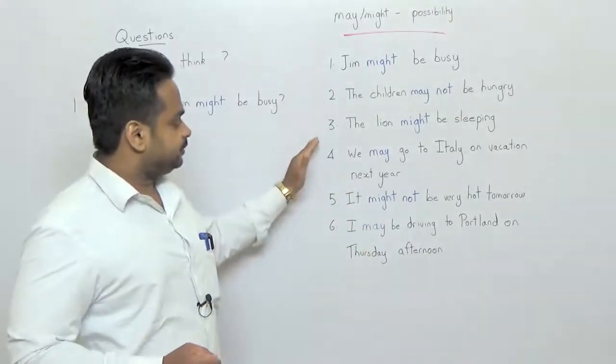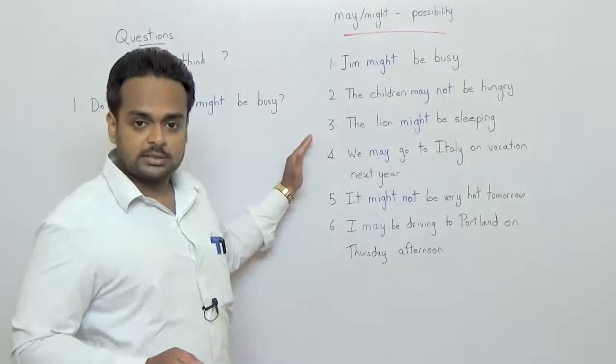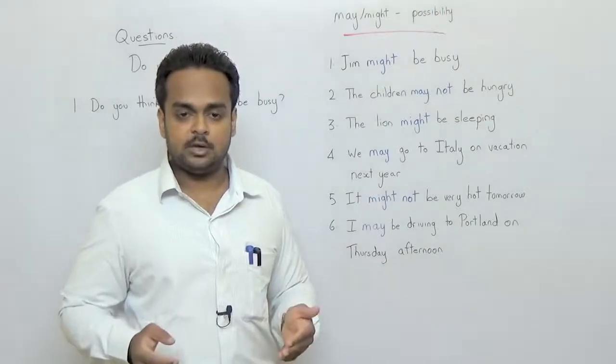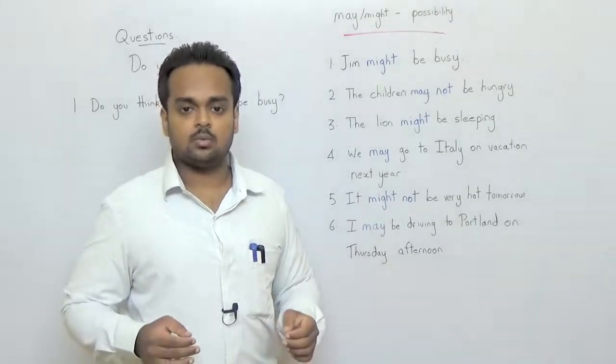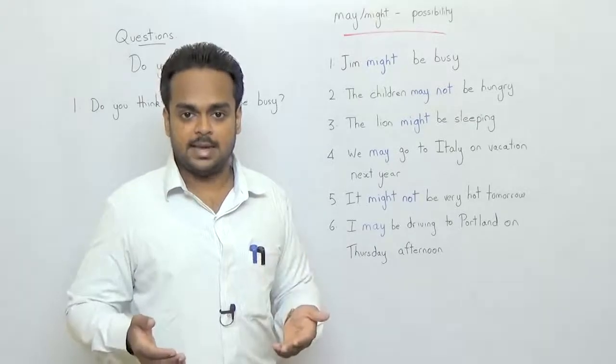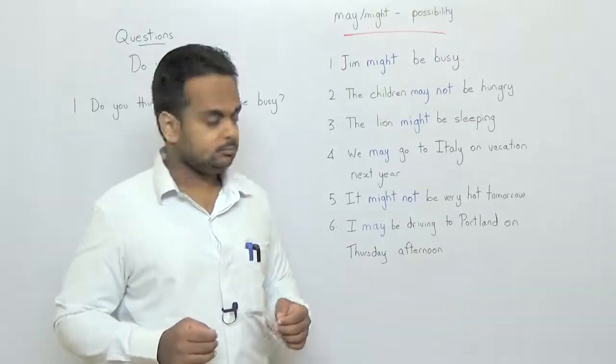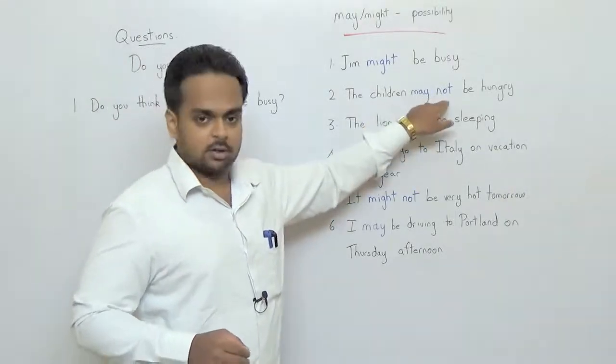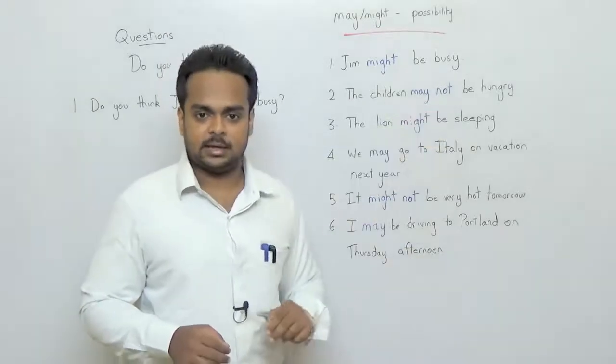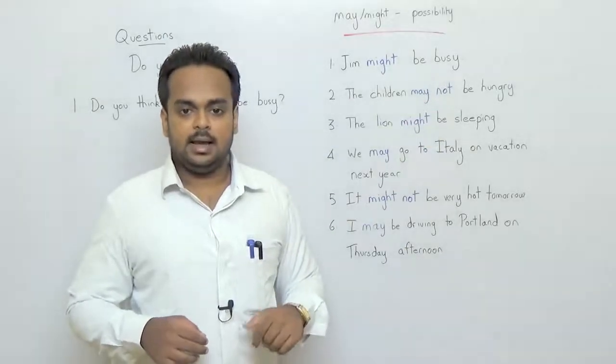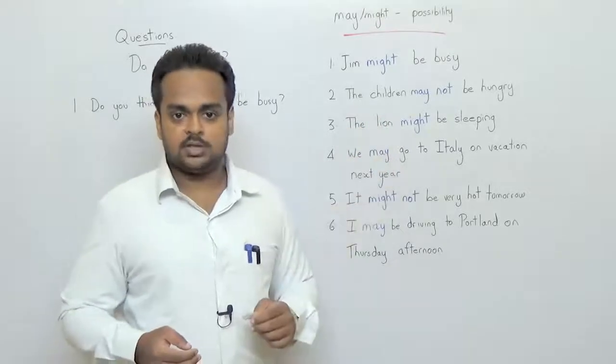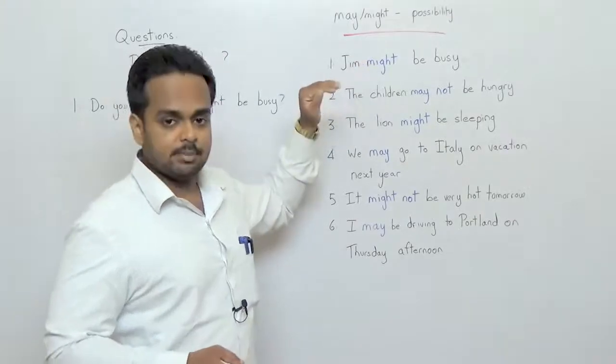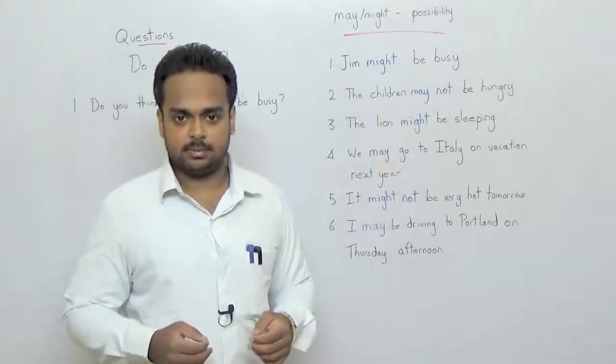In all of these sentences we're talking about the present tense and you notice this be over here. It's very common to use may be or might be when we're talking about the present and we're making guesses about the present tense. In the second example you will notice that we've used may not and we've used that to make a negative. You can make any of these sentences a negative simply by adding not after may or might. So Jim might not be busy or the lion might not be sleeping.